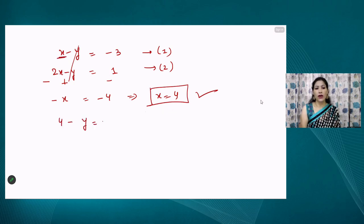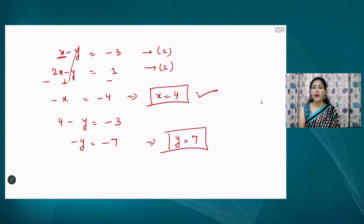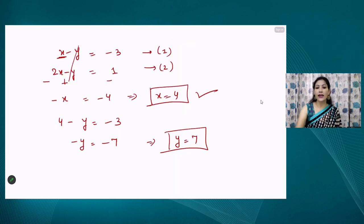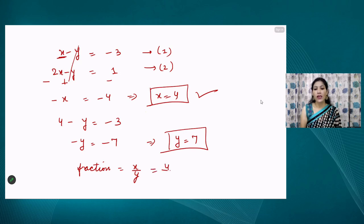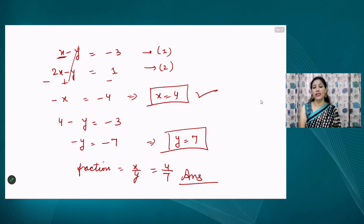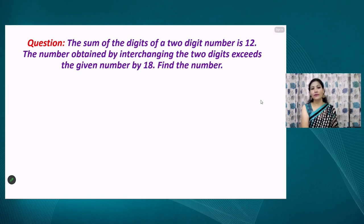We now have: equation 1: x − y = −3, and equation 2: 2x − y = 1. Using the elimination method and subtracting, we get −x = −4, so x = 4. Substituting back: 4 − y = −3, giving y = 7. The fraction is x/y = 4/7. Many viewers drop the answer at x and y, but the question asks for the fraction, so the final answer must be written as 4/7.